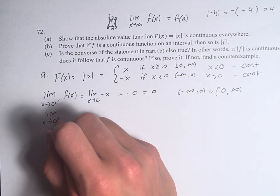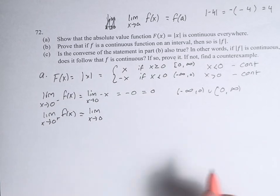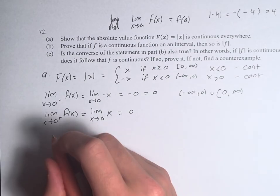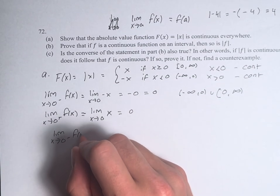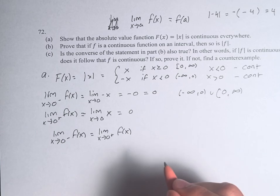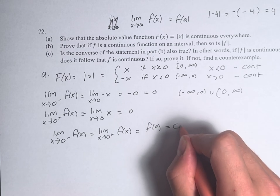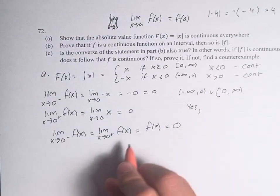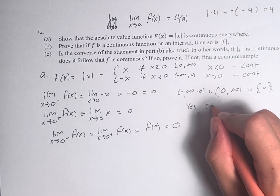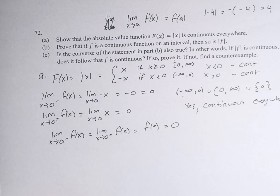From the right, the limit as x approaches 0 from values greater than 0 — we're using x, so we just plug it in directly and get 0. Therefore, the limit as x approaches 0 from the left equals the limit from the right equals f of 0 equals 0. Therefore, it's continuous at 0, and it's continuous on the two intervals. Therefore, the function is continuous over all real numbers, or as this problem puts it, everywhere.